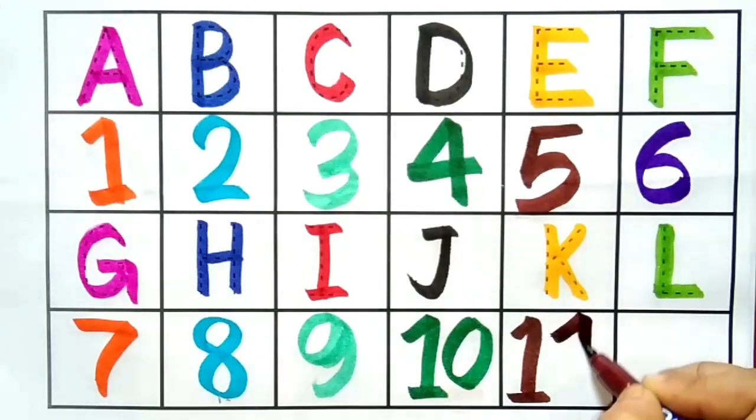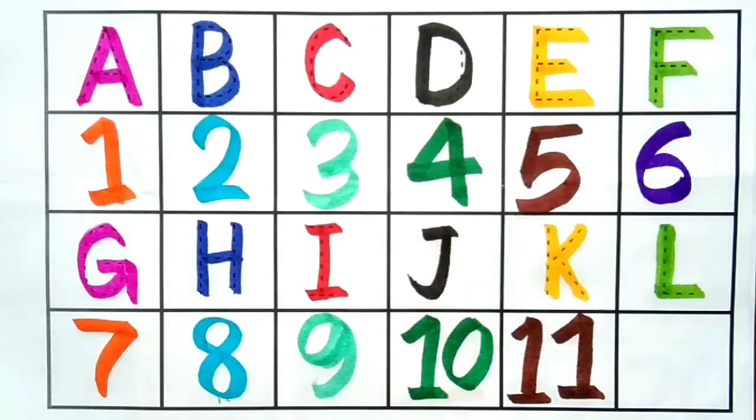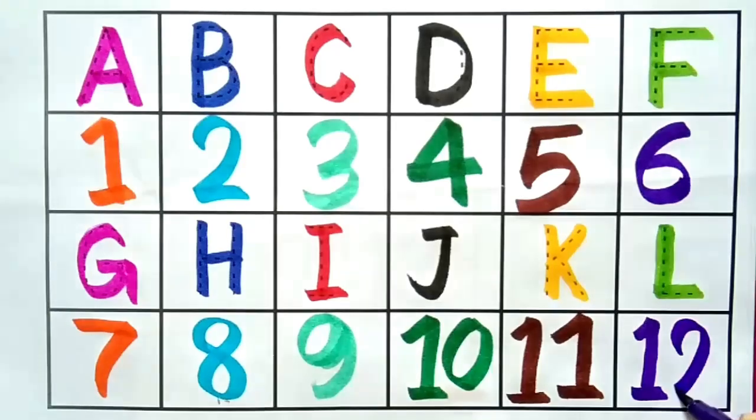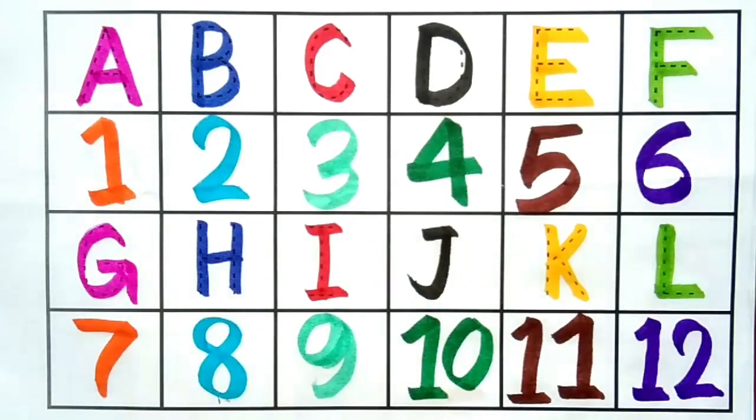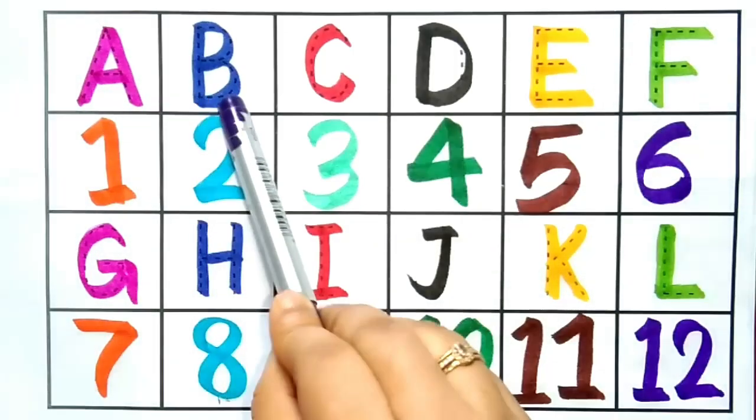Eleven, this is number eleven. Twelve, this is number twelve. Kids, let's repeat: A, B, C, D, E, F, G, H, I, J, K, L.